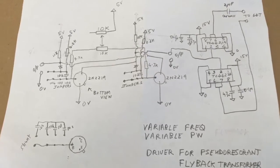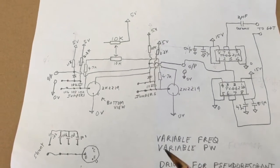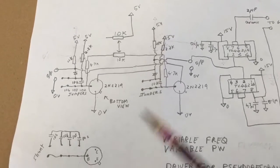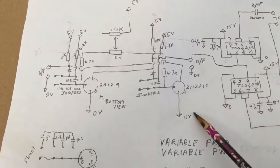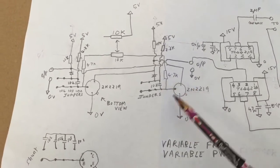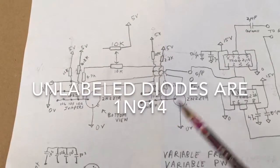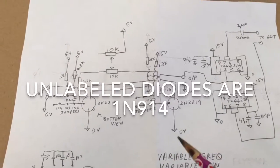So what I did was come up with this circuit. This shows a variable frequency, variable pulse width multivibrator circuit using two transistors. In this case I'm using 2N2219 transistors. This is actually how they look when you look at the bottom of them, and this is how the thing is connected up.